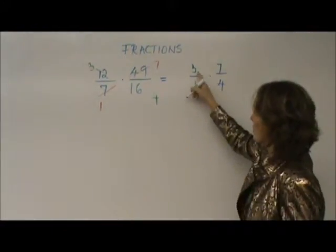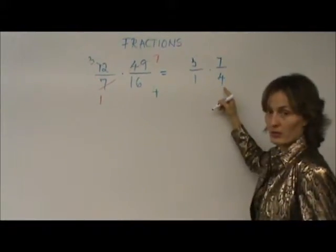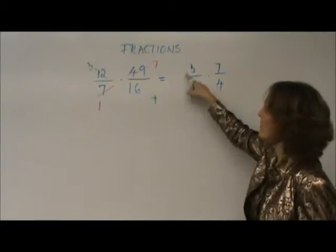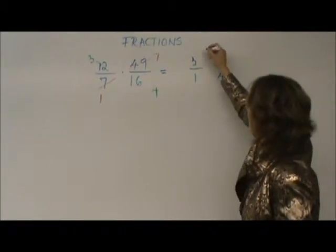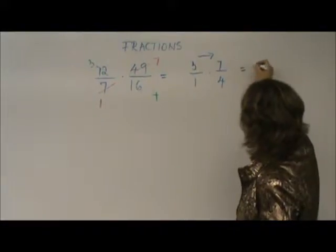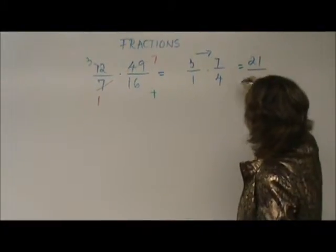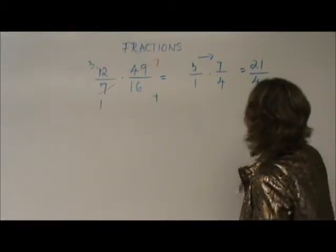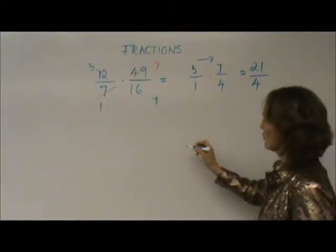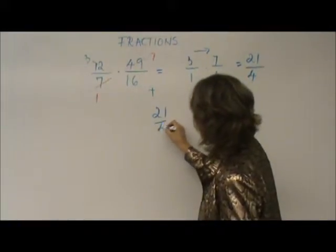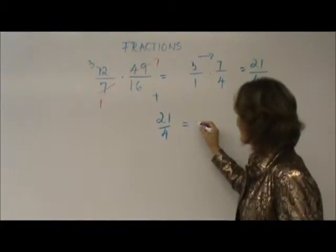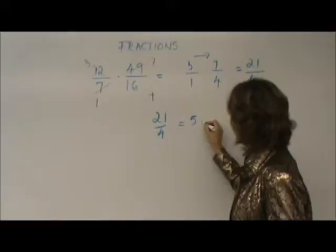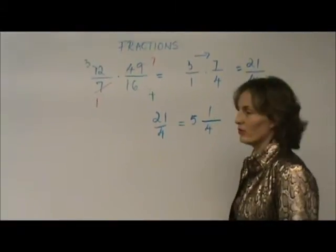All of them are prime. 1, 3, 7, 4 prime numbers. 4 is not prime, but has nothing in common with anything else. So, you straight multiply. 3 times 7 is 21. 1 times 4 is 4. How do you transform 21 fourths into a mixed number? Do you remember 21 candies for 4 kids? Each one of them gets 5 candies? 1 for you.